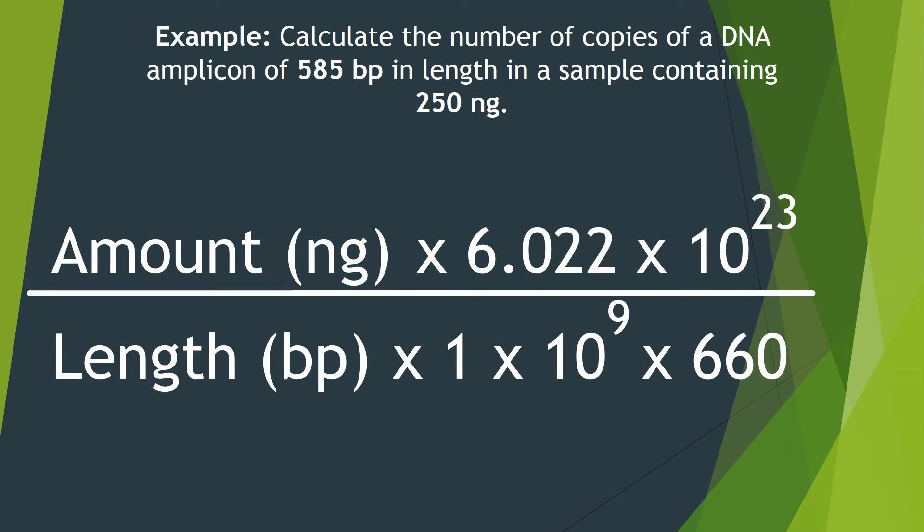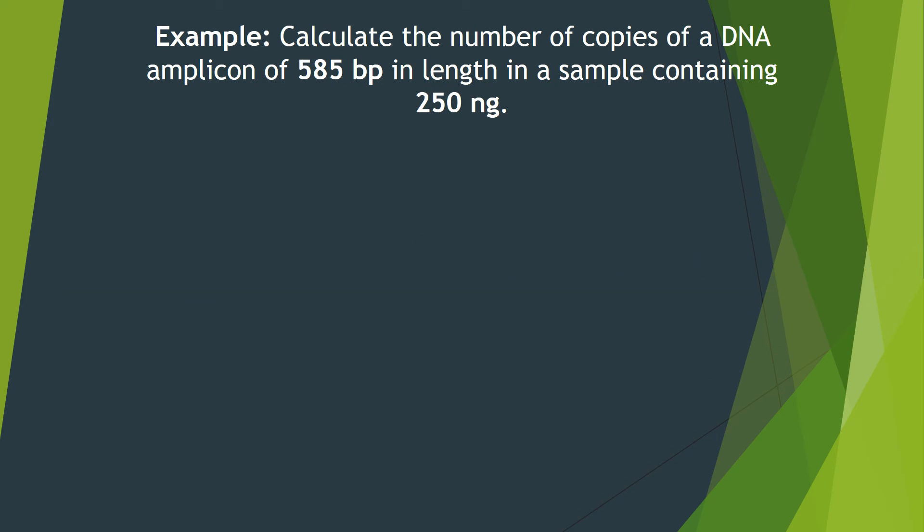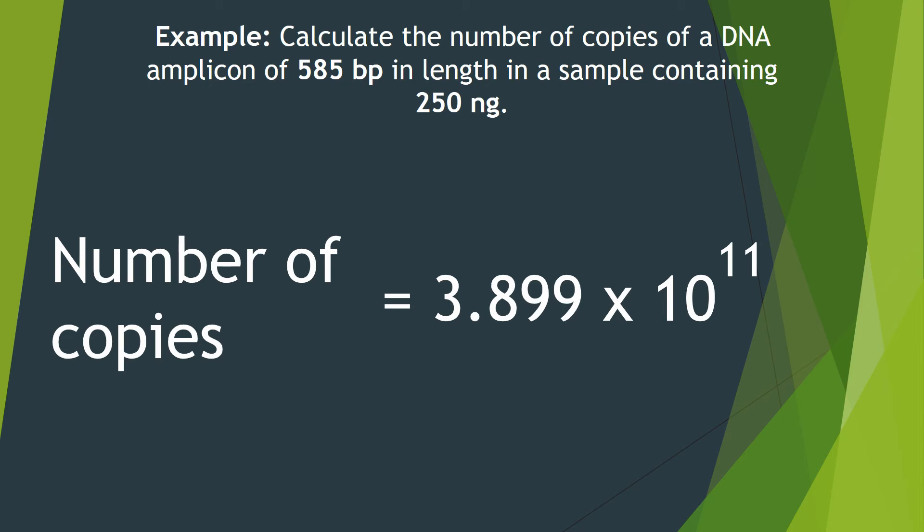And then what we can do is go back to the equation and we can replace the amount of the DNA that we have into the equation which is 250 nanograms and also we can replace the length with the known length which is 585 base pairs. And when you do all of this in a scientific calculator, it comes out as the number of copies as 3.899 times 10 to the power of 11.